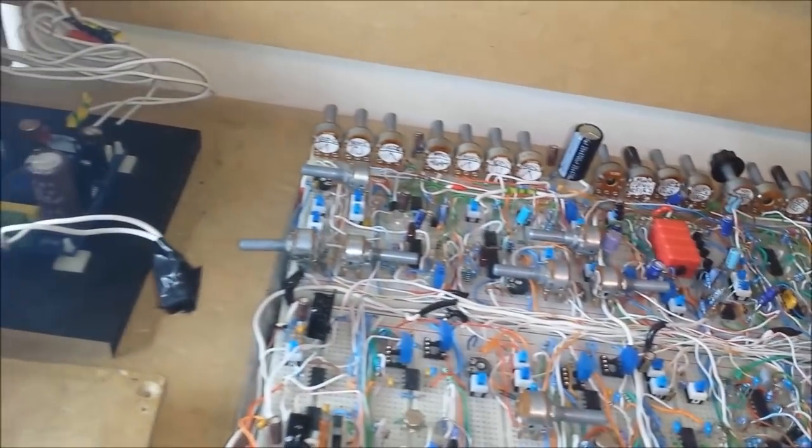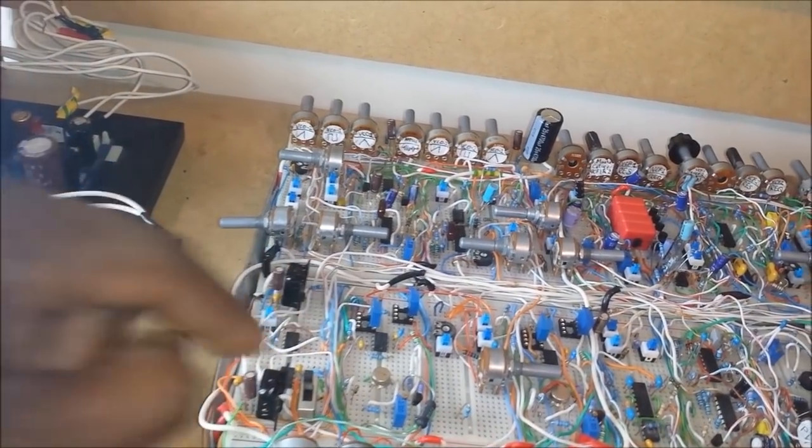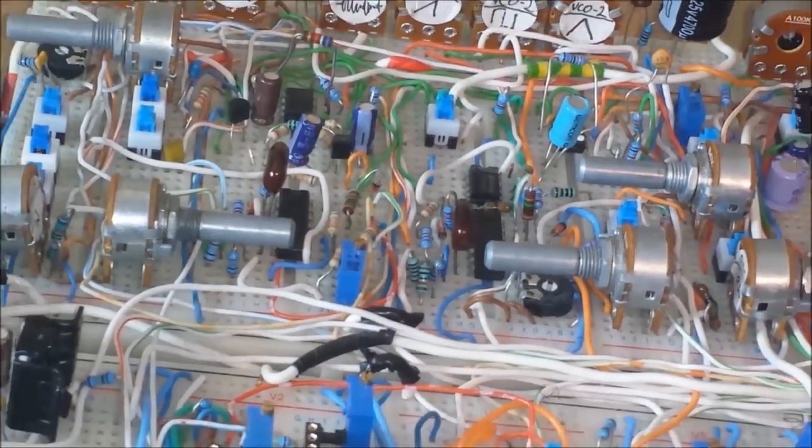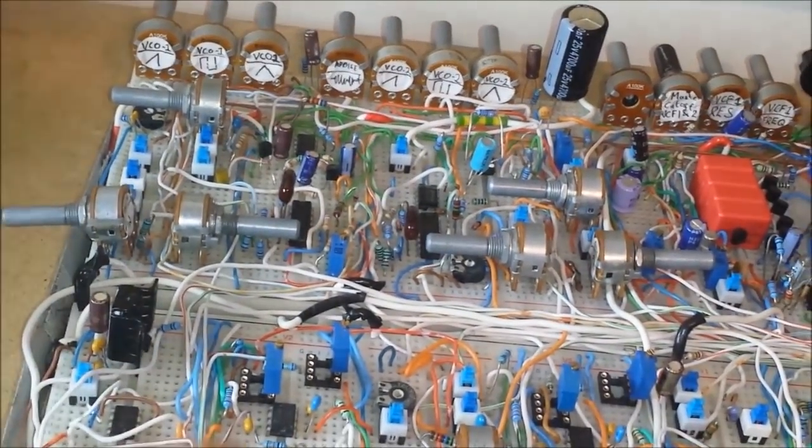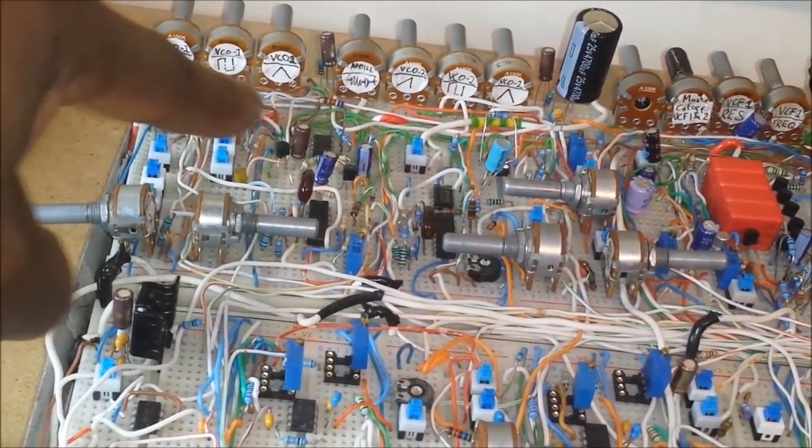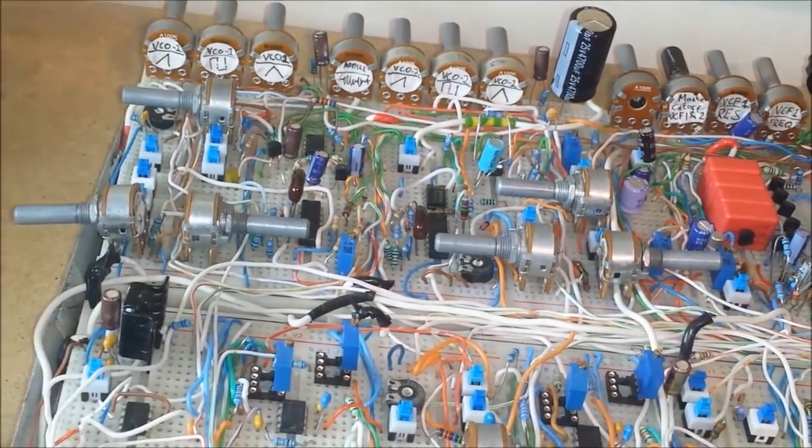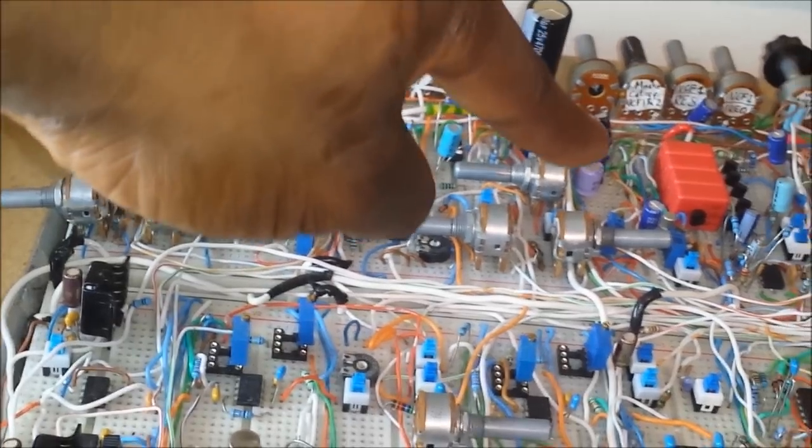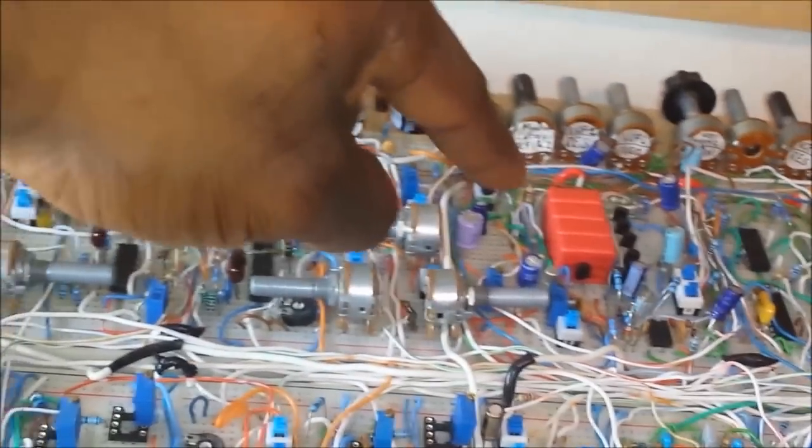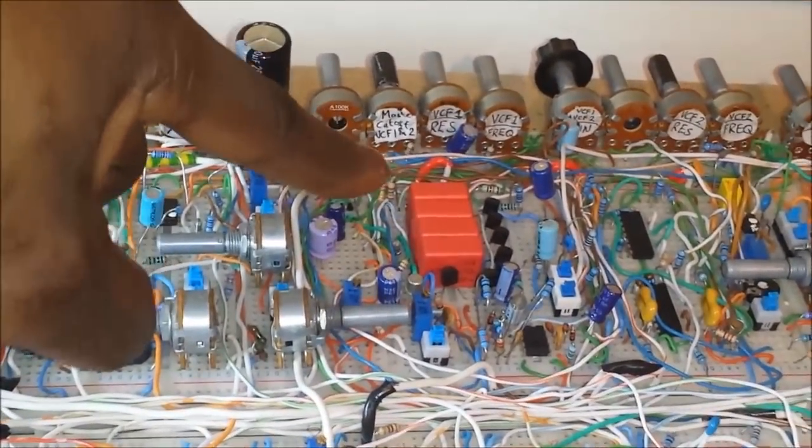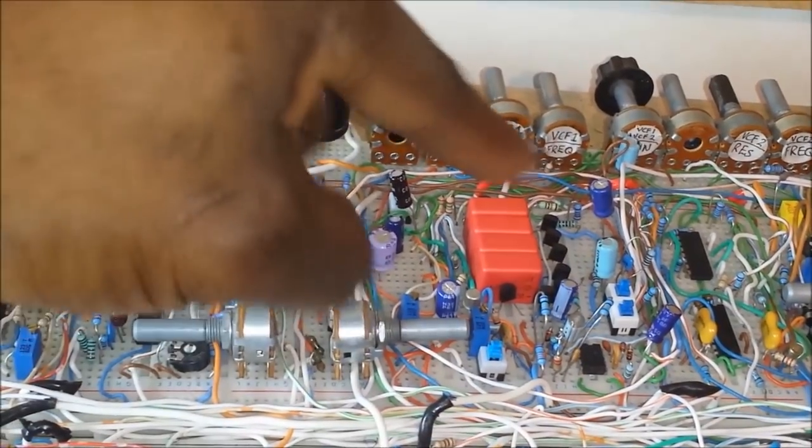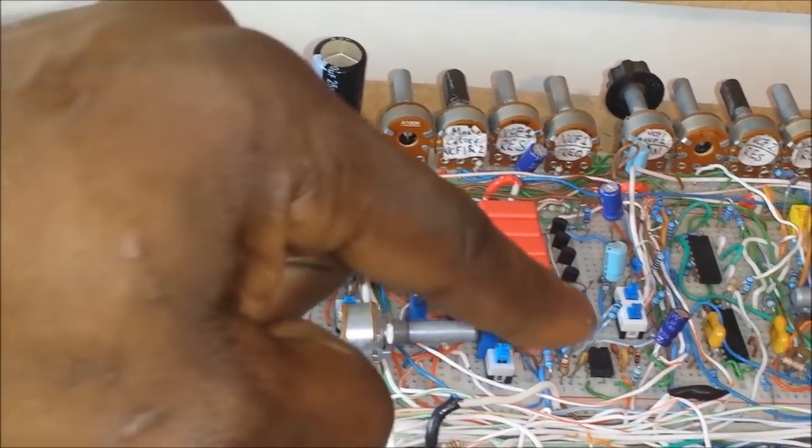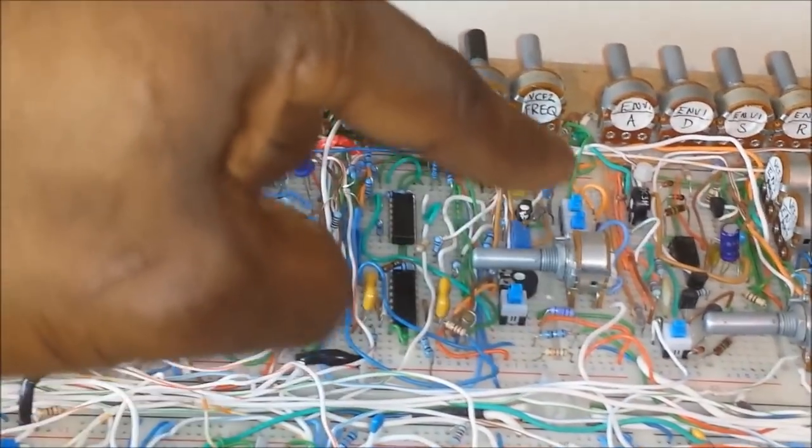So what we have here is the VCO boards. We have VCO1, VCO2, we have an exponential converter there. This is all the wave shaping and mixing side. And we go into a mixer, which goes on to the next board, which has the VCF1, the Steiner-Parker clone filter. Over here we have the SEM, Oberheim SEM clone filter.